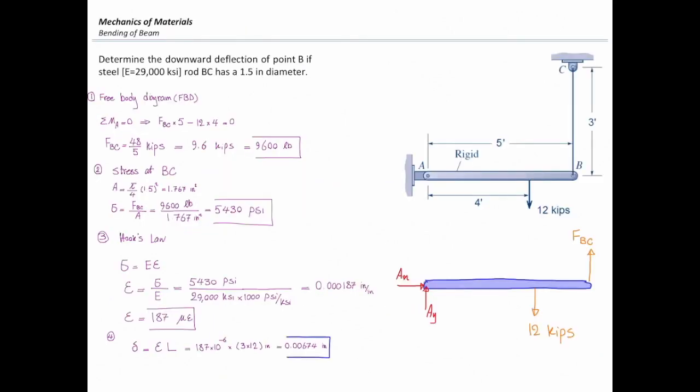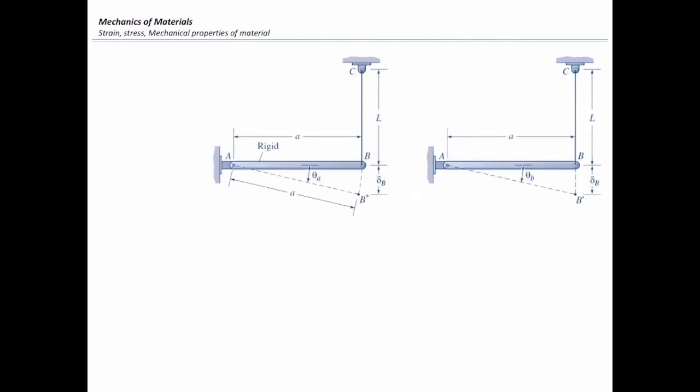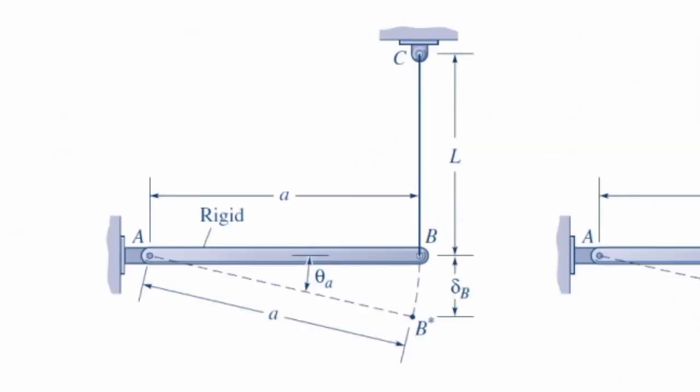I just wanted to show you one example on how we can use this stress-strain relation or Hooke's Law to determine deformations from force or in the reverse way. We can determine force from given deformation. Some of you may notice that if this element rotates about point A, it is actually forming a curved line. Because it is actually a part of a circle.